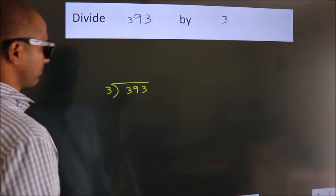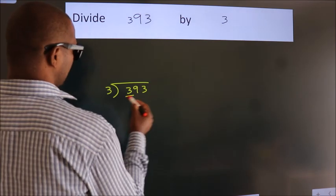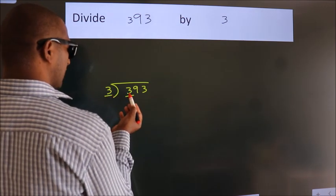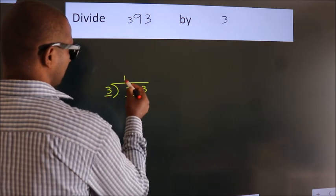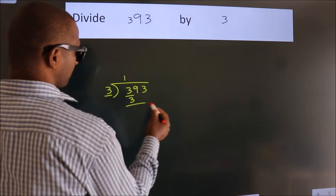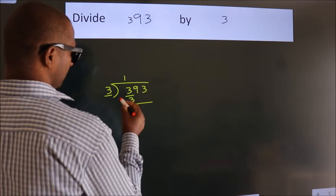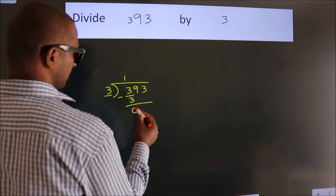Next. Here we have 3. Here 3. When do we get 3? In 3 table. 3 once, 3. Now we should subtract. We get 0.